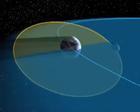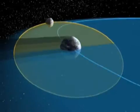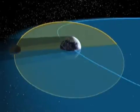This special alignment is only possible during the so-called eclipse seasons, which happen about every six months.